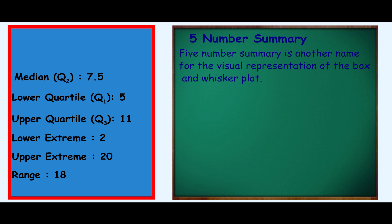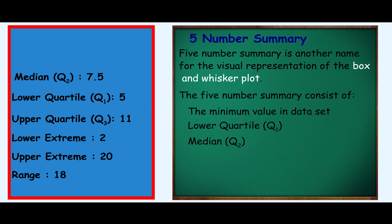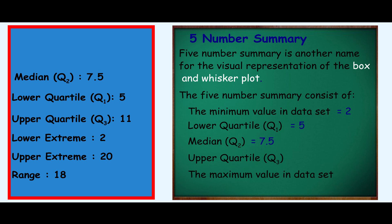Now we have our five-number summary, which is another name for the visual representation of a box and whisker plot. The five-number summary consists of the minimum value, the lower quartile, the median, the upper quartile, and the maximum value. For our data set: minimum value is 2, Q1 (lower quartile) is 5, Q2 (median) is 7.5, Q3 (upper quartile) is 11, and the maximum value is 20. Once we have our five-number summary, we can easily draw a box and whisker plot.